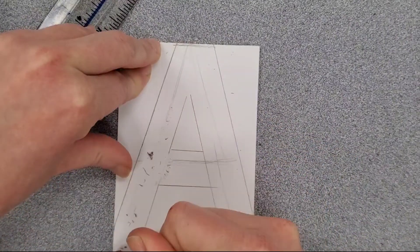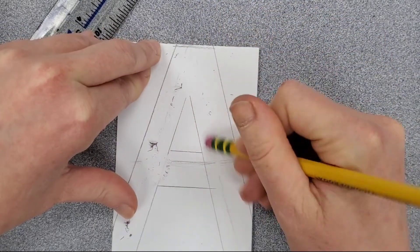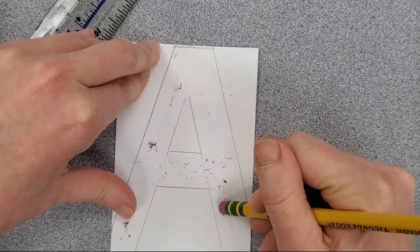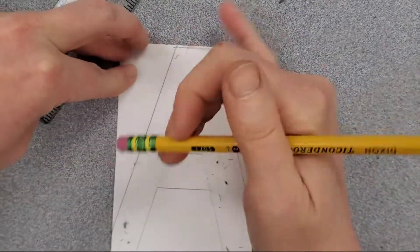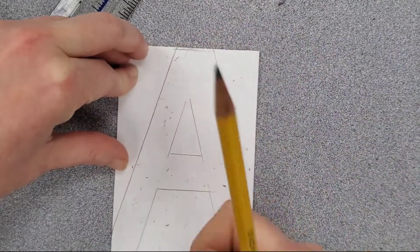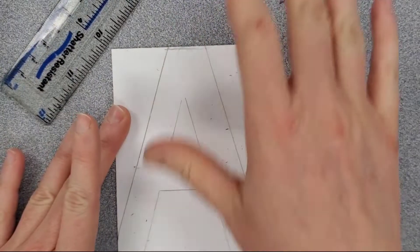So I'm erasing my skeleton. Again, it's really important that you draw your skeleton lightly so that it can be erased, because it's just kind of like training wheels to help us get started with the letter itself. So right now this is what I have in terms of my block letter A.